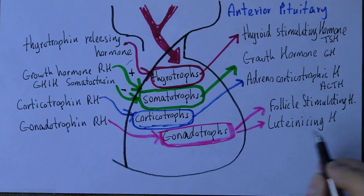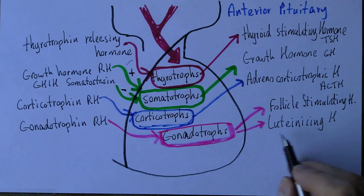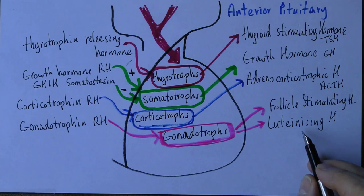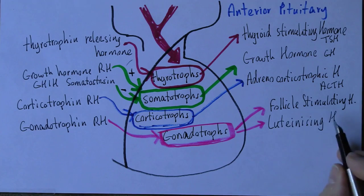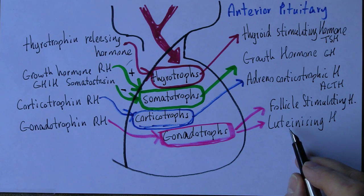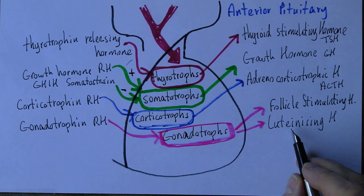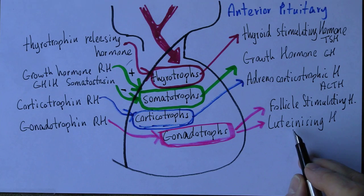Luteinizing hormone — 'luteinizing' means yellowing — changes the colour of the follicle in the ovary. It also stimulates ovulation, the actual release of the ovum from the ovary, and regulates progesterone levels in the second half of the menstrual cycle. In men, the luteinizing hormone stimulates the cells in the testes that produce testosterone. So again, it functions in both males and females.